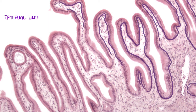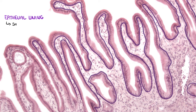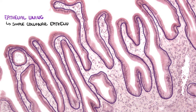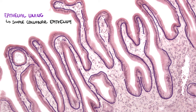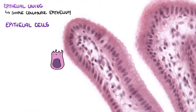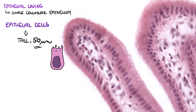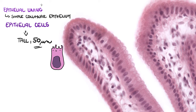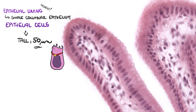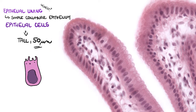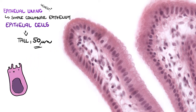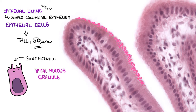The epithelial lining is composed of simple columnar epithelium. Epithelial cells are rather tall, reaching up to 50 micrometers, which makes the gallbladder epithelium the highest simple epithelium of all. The cells have abundant but short microvilli and small apical mucus granules.